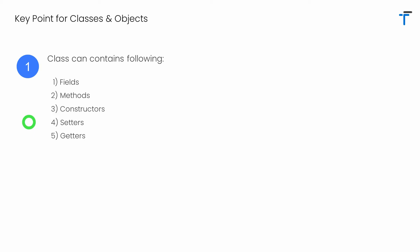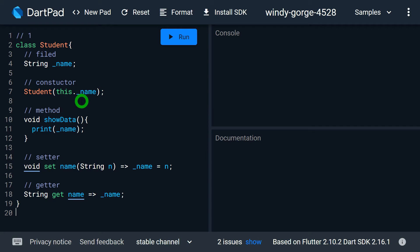Let's look at the first point. A Dart class can contain fields — that is, variables — which can be a normal instance variable or a static variable. Second are the methods, which can be an instance method or a static method. Then constructors — there might be a single constructor or multiple constructors based on your requirements. Then the setters and getters.